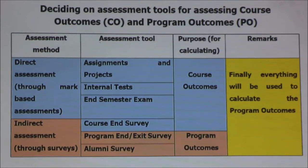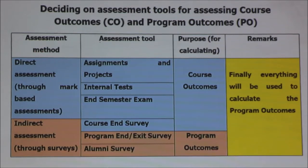Now let us look at the indirect assessment methods to be used to assess program outcomes. First, we consider whether direct methods can be used for assessing program outcomes. Program outcomes cannot be assessed using direct methods because only after a student completes the full program can we assess to what extent program outcomes have been achieved. Therefore, there is no question of direct assessment being used for program outcomes — we can use only indirect assessment methods, meaning only through surveys can we assess program outcomes.